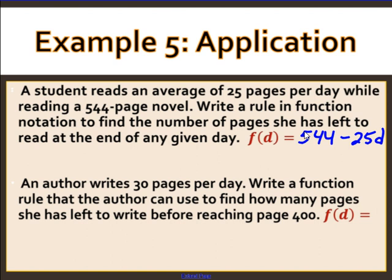Last problem: An author writes 30 pages per day. Write a function rule to find how many pages she has left to write before reaching page 400. The function of d equals 400 − 30d, where d is the number of days. Multiply days by 30 and subtract from 400 to find pages remaining.